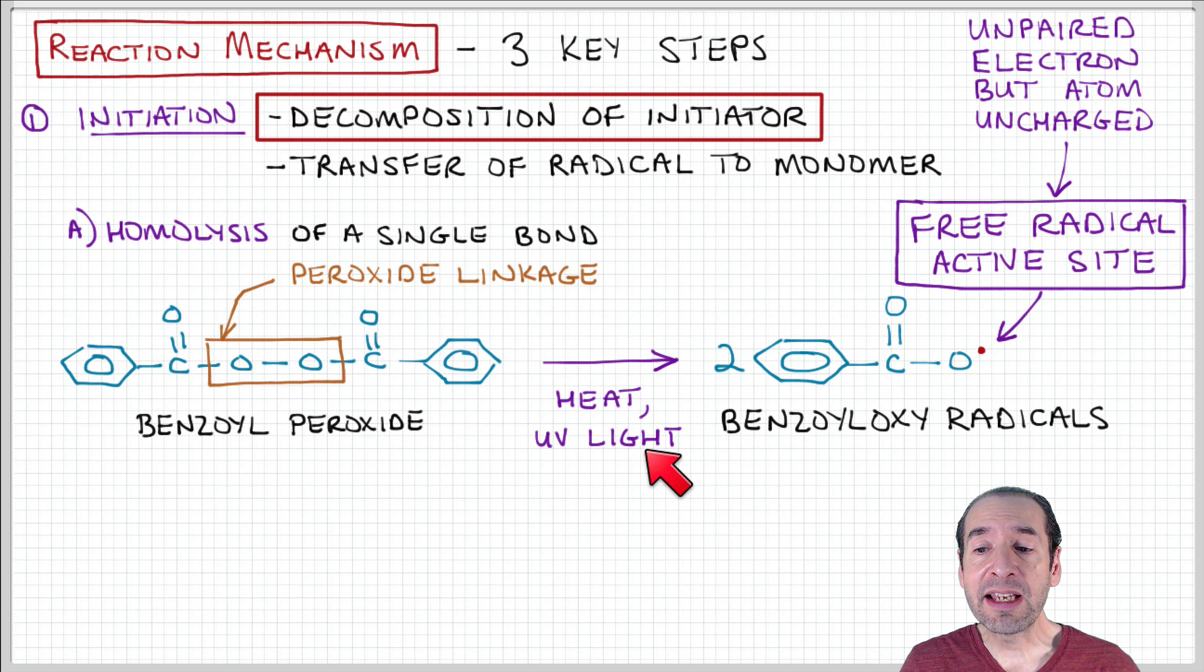So remember, a free radical describes a site where there is an unpaired electron, but unlike an ionic group, the molecule doesn't have a net charge because the total number of protons and electrons are equal. But this is still a reactive site, and it's the key to this polymerization process. So here, benzyl peroxide, this linkage is cleaved to form two benzyl oxy radicals.